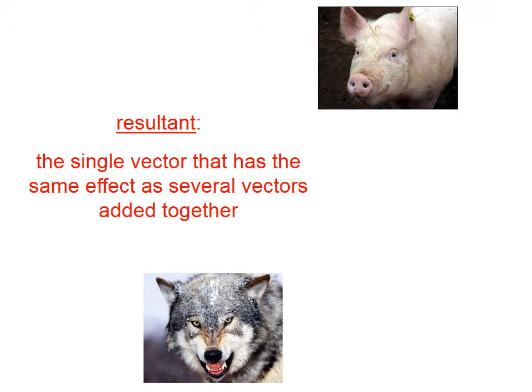Let's say that we have a wolf here and a potential meal in the upper right. If this wolf creeps in this direction and then changes direction to get to his potential meal, in effect, the wolf will have started down here at the bottom of the screen and ended right there. This black dashed line represents the resultant, the single vector that has the same effect as several vectors added together.